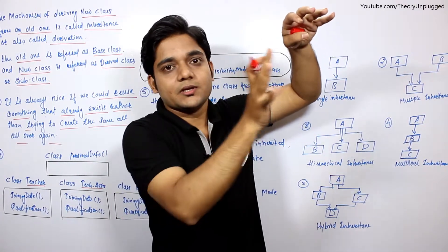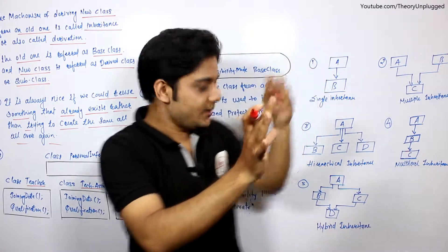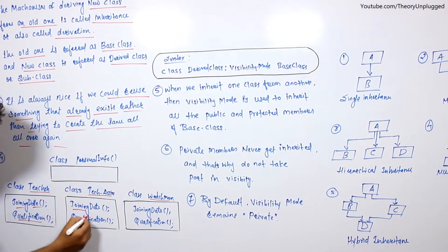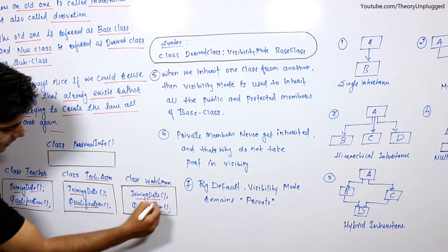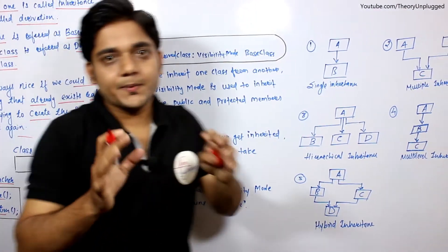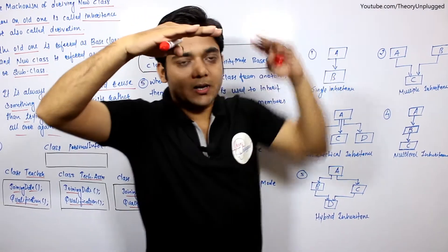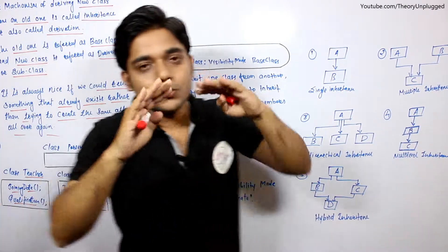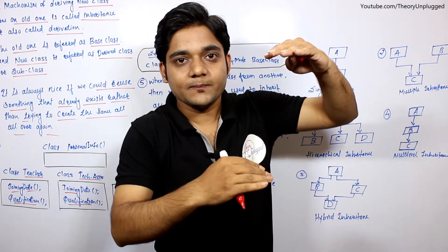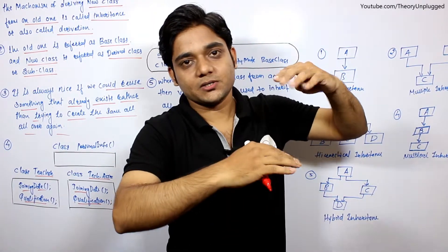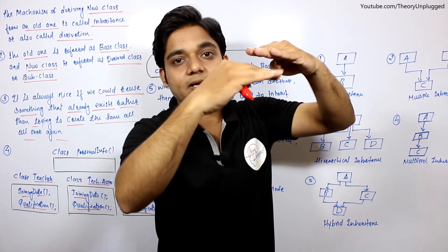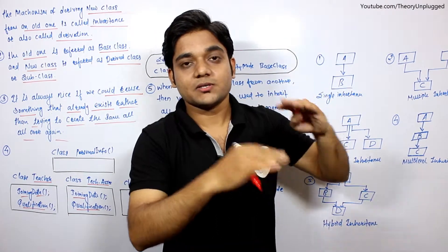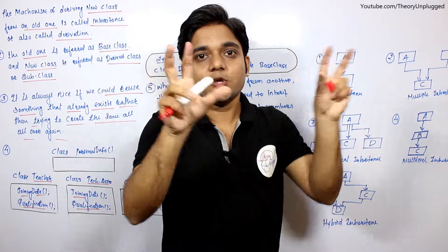Teachers की information चाहिए — joining date and qualification। Same technical assistant के लिए joining date, qualification। फिर watchman के लिए भी joining date, qualification। अब क्या हो रहा है — class Teacher, class Technical Assistant और class Watchman उसमें हर चीज़ repeat हो रही है। तीनों में same चीज़ लग रही है।